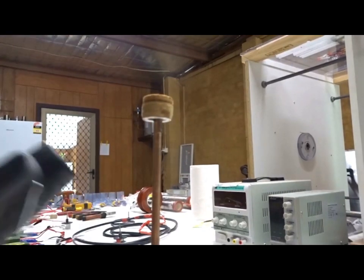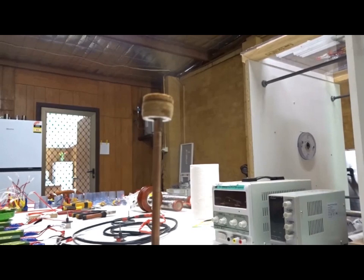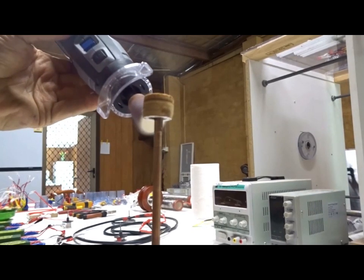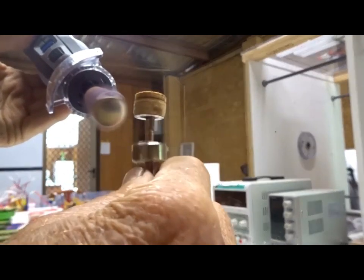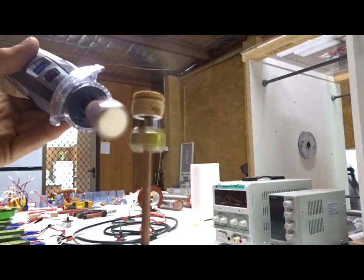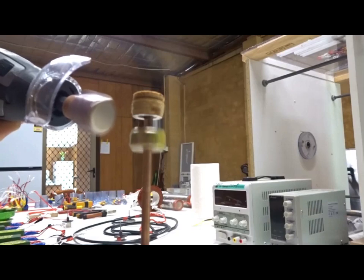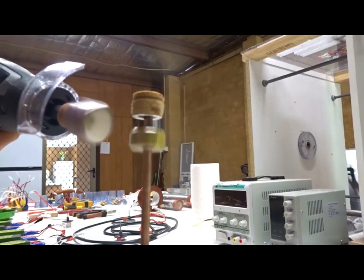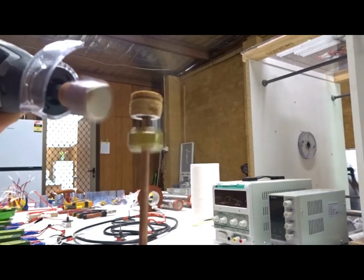We can also see levitation with the Dremel at 45 degrees to the magnet. Put it over here and it will stabilize right there with the Dremel now at 45 degrees. We take it down so it stays stable.